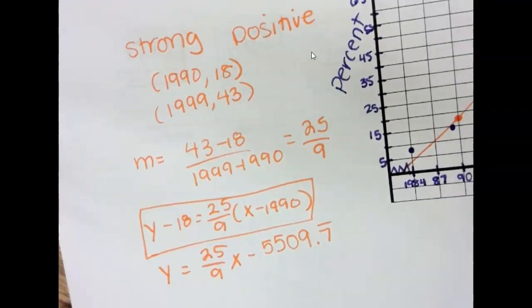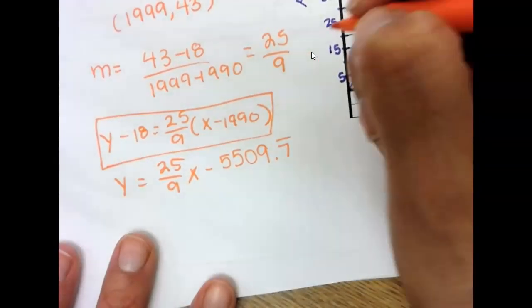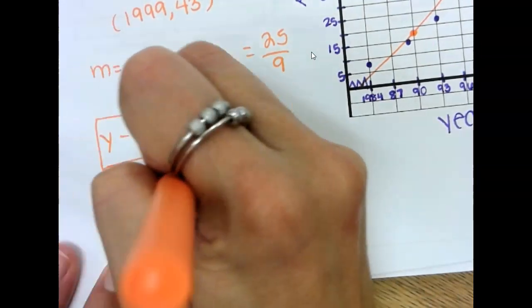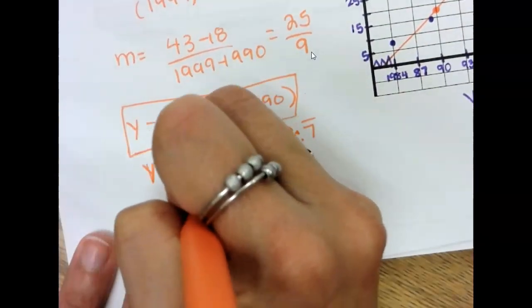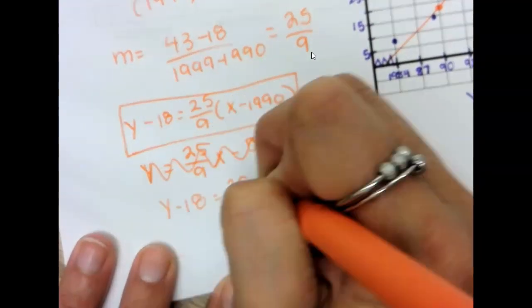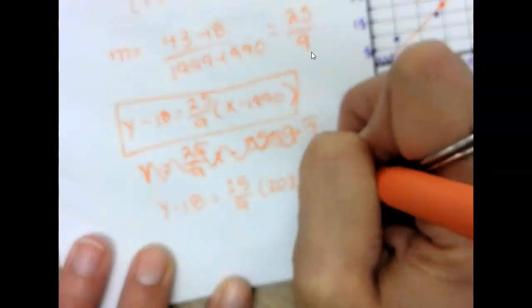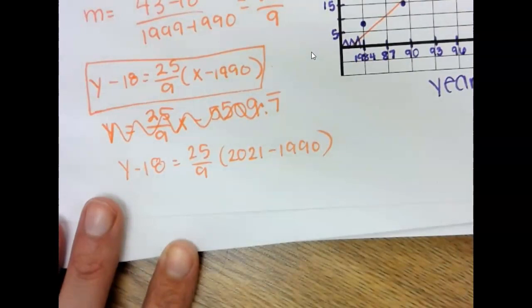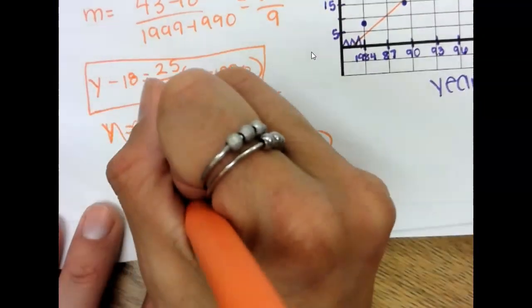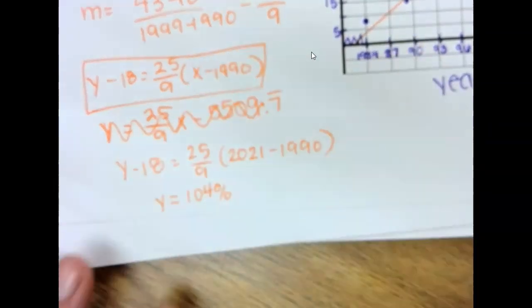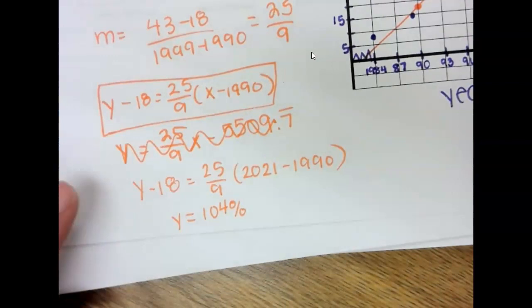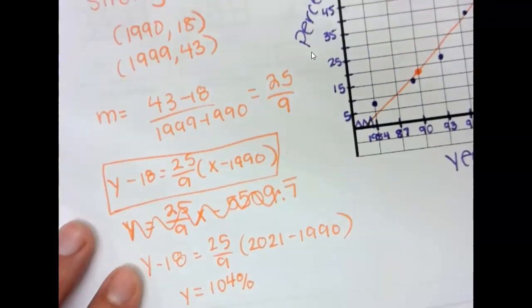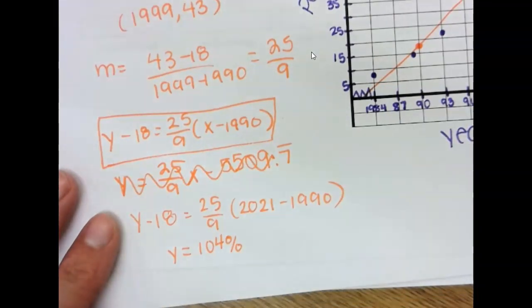Because if I asked you what the percent was in 2021, you could just plug in here. And you would say x minus 18 equals 25 ninths 2021 minus 1990. And we would get that y is equal to 104%. And what that means is that the percent of households in the US with at least one computer is at 104%.